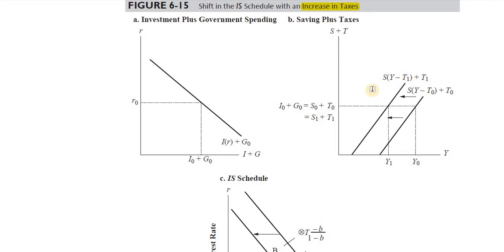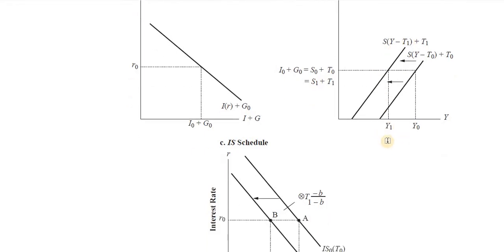To reduce saving, we need to reduce the level of income in the economy, since saving is a function of income. If income falls from y0 to y1, saving falls to the required level. We write S1 and T1 — taxes are now T1, and saving is S1. But S1 plus T1 again equals I0 plus G0, restoring equilibrium. Level of income has fallen, saving has fallen, but the goods market equilibrium condition is maintained.